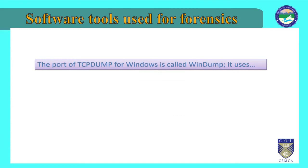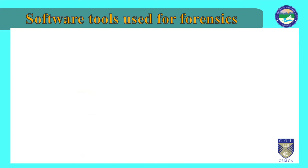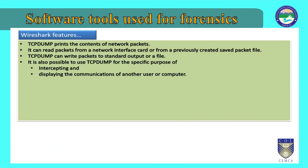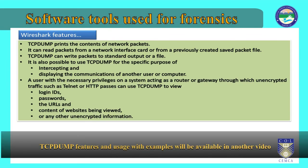TCPdump prints the contents of network packets. It can read packets from a network interface card or from a previously created saved packet file. TCPdump can write packets to standard output or a file. It is also possible to use TCPdump for the specific purpose of intercepting and displaying the communication of another user or computer. A user with the necessary privileges on a system acting as a router or gateway through which unencrypted traffic such as Telnet or HTTP passes can use TCPdump to view login IDs, passwords, URLs, and the content of websites being viewed, or any other unencrypted information.